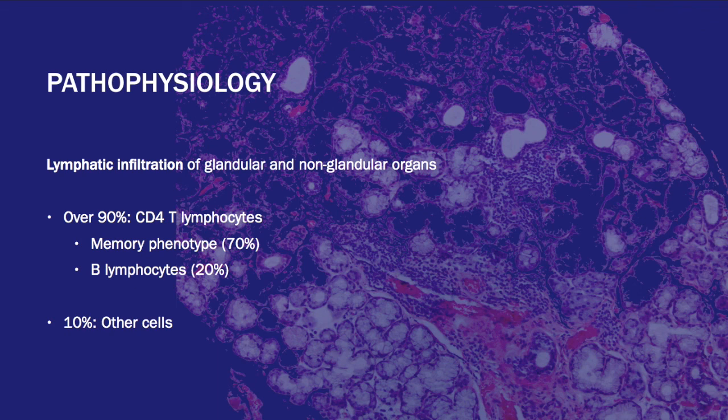The manifestations of Sjögren's Syndrome result from lymphocytic infiltration of glandular and non-glandular organs. Over 90% of the infiltrating cells are either CD4 T lymphocytes with memory phenotypes or B lymphocytes. The remaining 10% include other cells such as plasma cells, CD8 lymphocytes, T regulatory cells, natural killer cells, or dendritic cells.